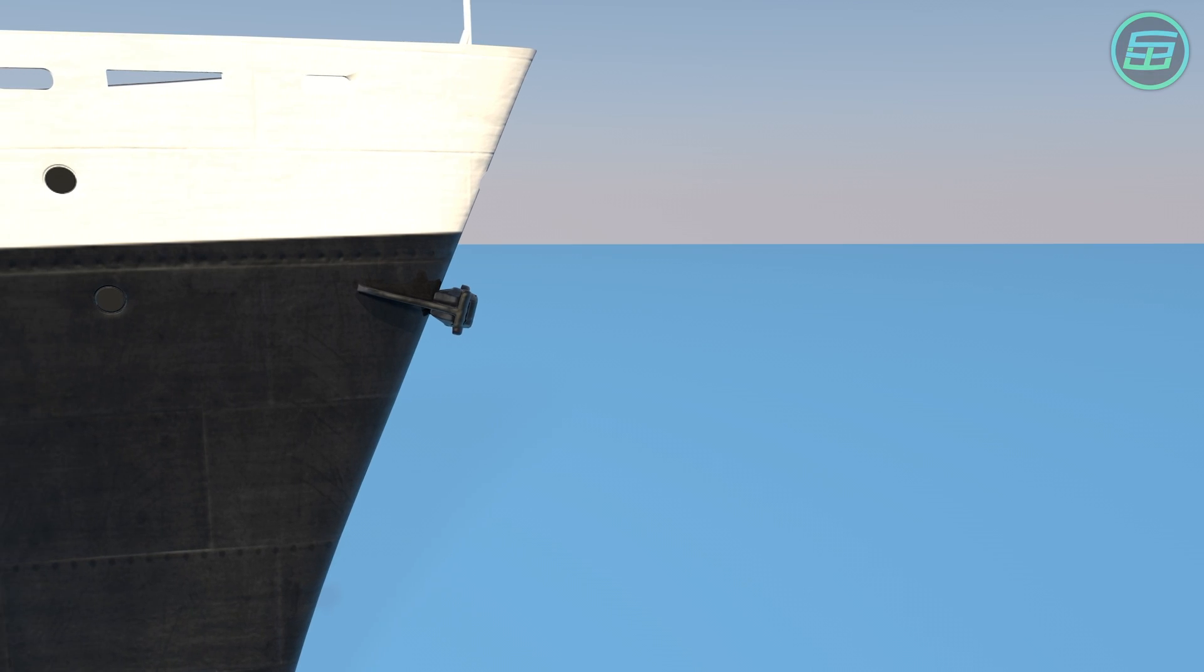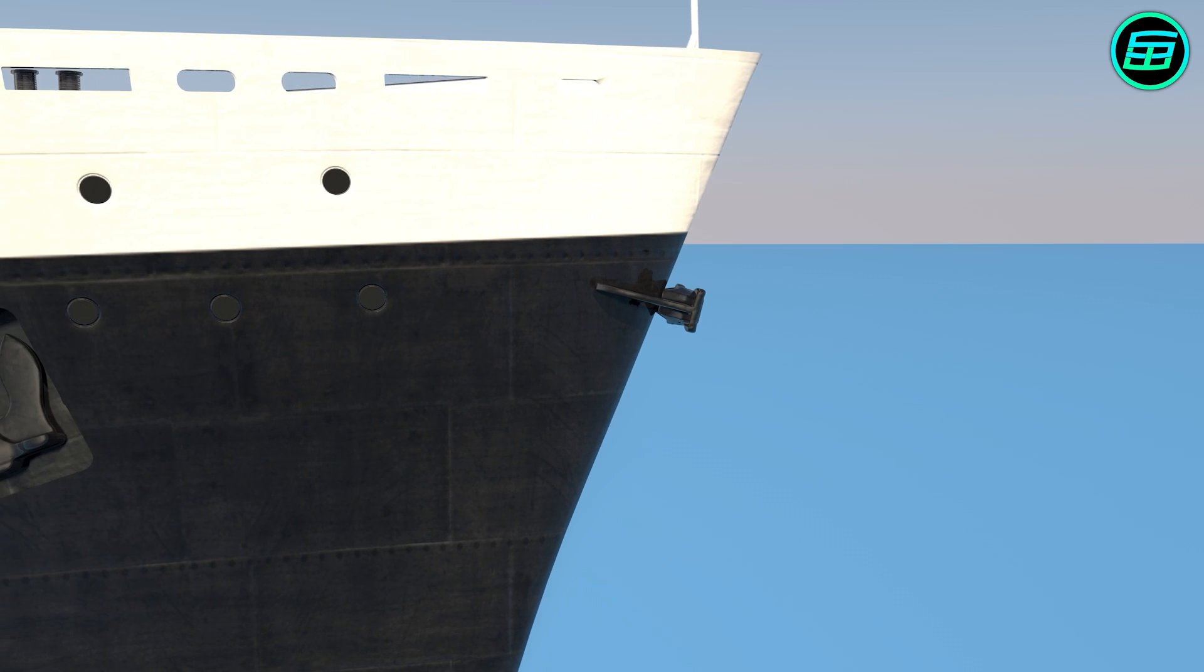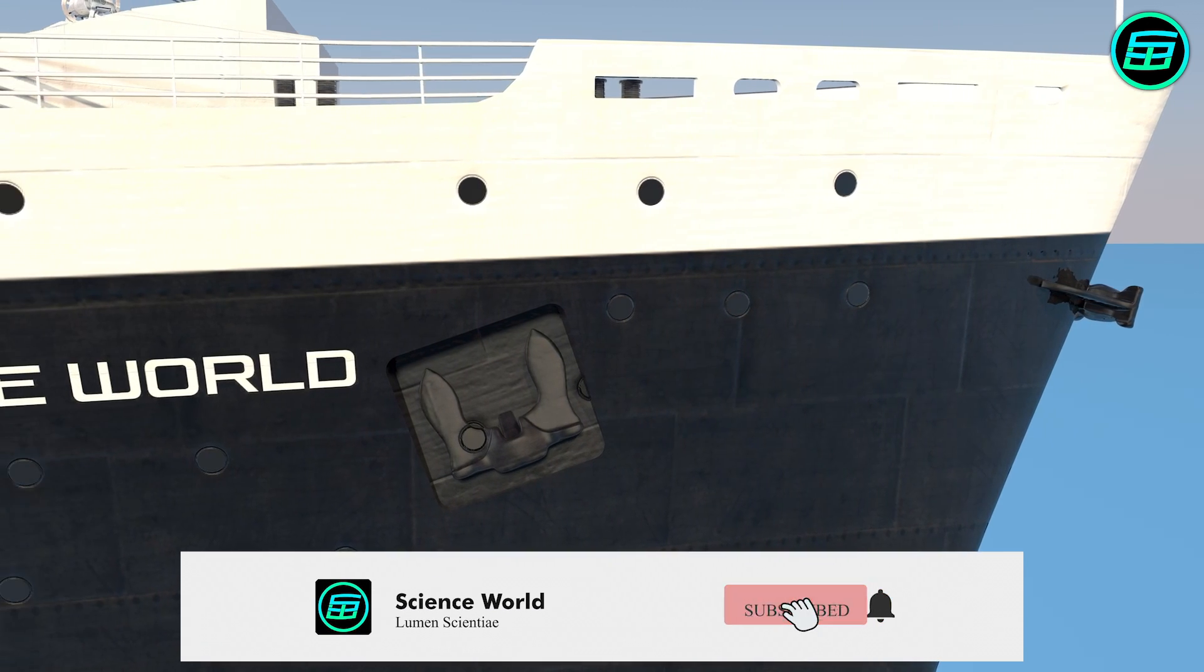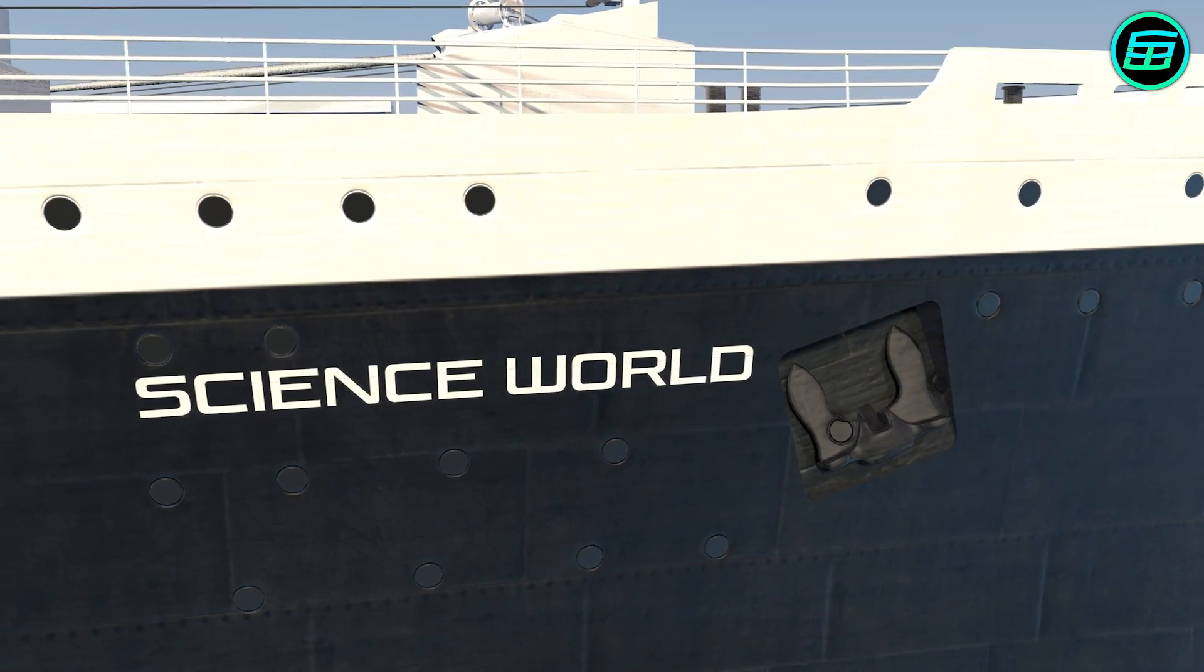If you throw a lump of iron weighing just 1 kg into water, it'll immediately sink. So how can ships that weigh thousands of tons float on water?